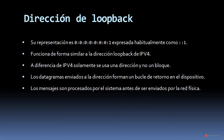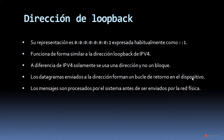Al igual que en IPv4, en IPv6 encontramos la dirección de loopback. Su representación es 7 bloques de ceros y un 1, expresada habitualmente como ::1 en su formato simplificado. Funciona de forma similar a la dirección loopback de IPv4, aunque a diferencia de esta, solamente se usa una dirección y no un bloque. Los datagramas enviados a esta dirección forman un bucle de retorno en el dispositivo y los mensajes son procesados por el sistema antes de ser enviados por la red física.